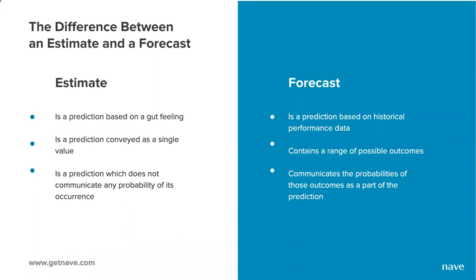It is important to note that data displayed on a CFD depicts only what has happened for a given process and should not be used for any type of future predictions. When it comes to future predictions, there are two approaches to answering the question 'when will this be done?': an estimate and a forecast. Estimates are predictions based on guesswork, judgment, or intuition — delivered as a single value, with no probability of occurrence. Forecasts, on the other hand, are based on historical performance data, communicated as a range of values with the probability of those values occurring. Forecasting is faster, cheaper, and much more reliable than estimating.